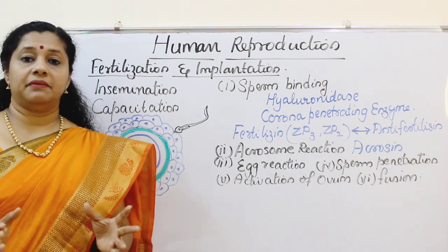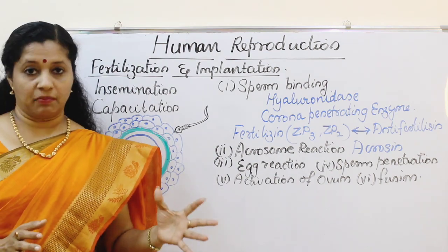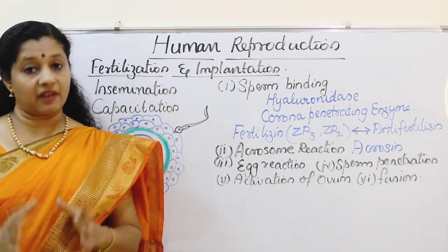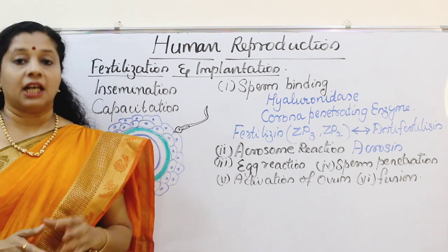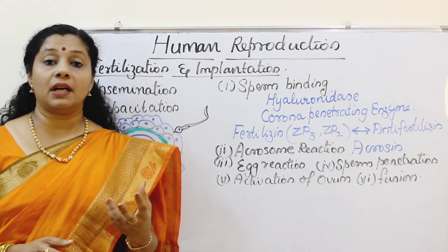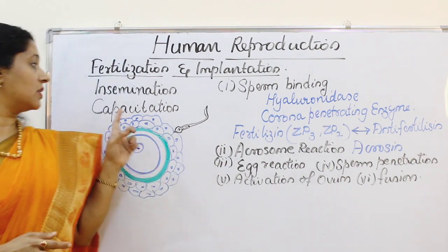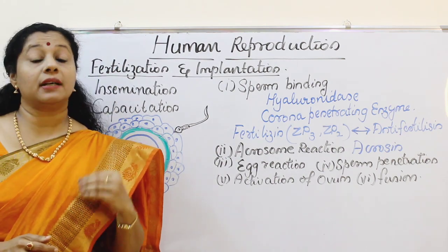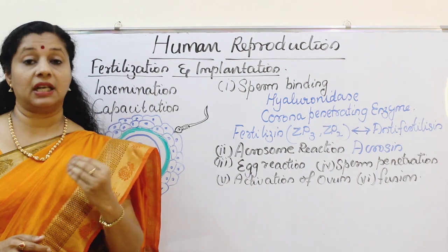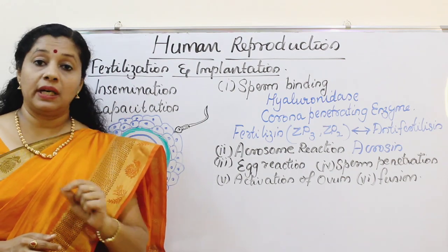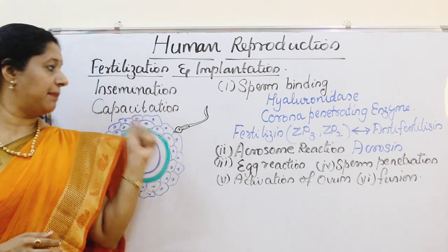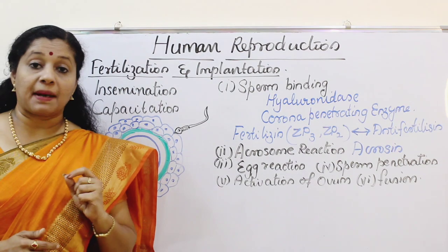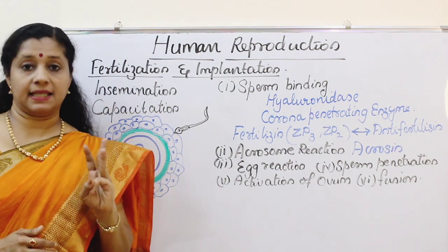A number of them will be immobilized or eaten away. A number of them become functional. The functional sperms will now undergo a process called capacitation, because initially the sperm is not able to fertilize the ovum, but only after capacitation it can fertilize an ovum. Capacitation involves three steps.